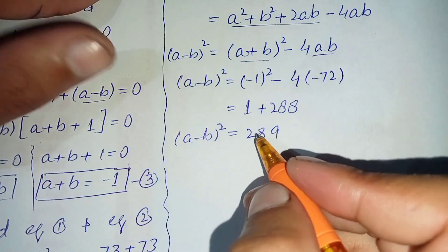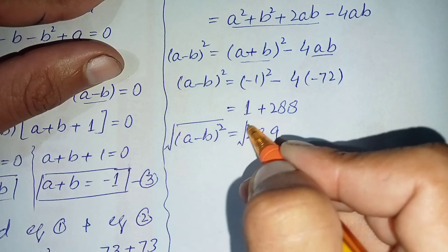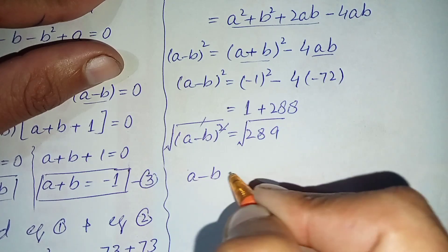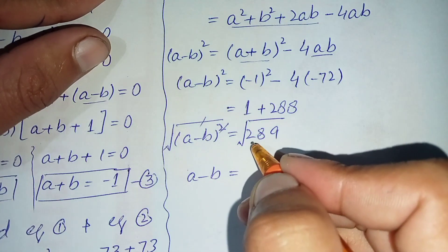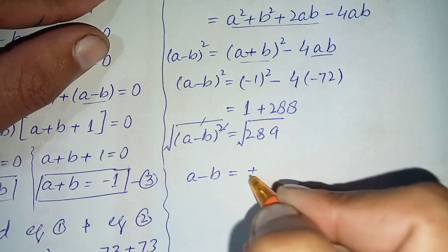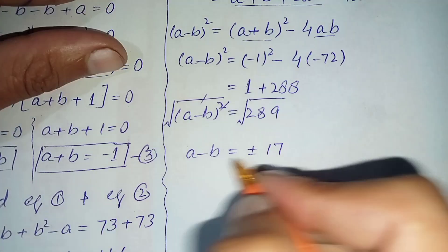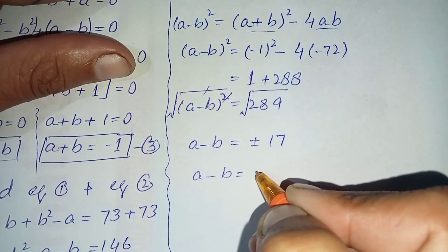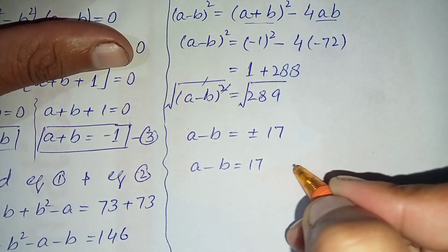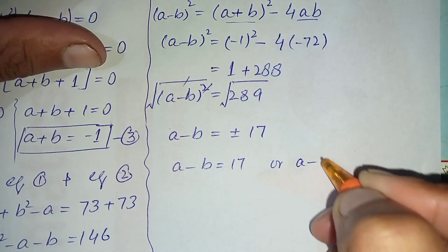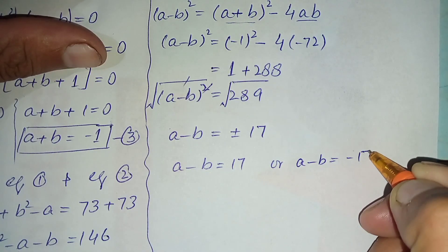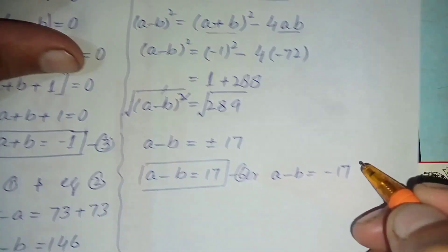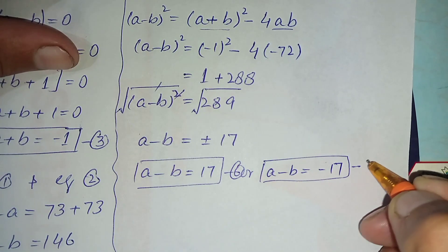Taking the square root on both sides, the square and square root cancel, leaving a minus b equals plus or minus the square root of 289, which is 17. So a minus b equals plus 17 (equation six) or a minus b equals minus 17 (equation seven).